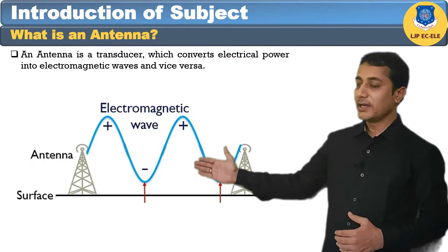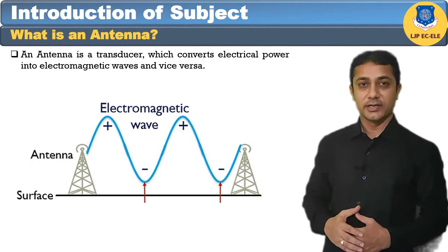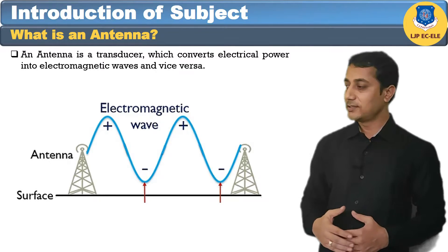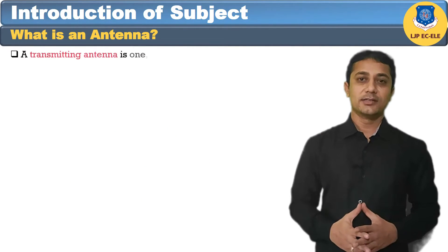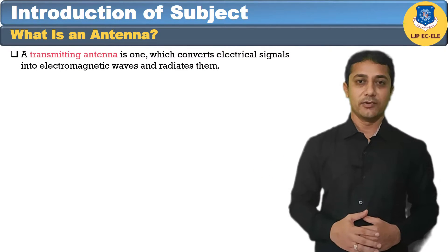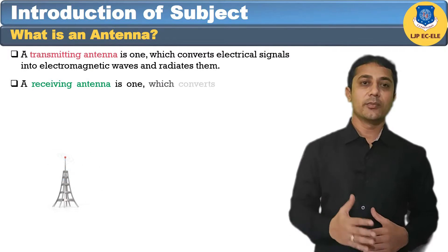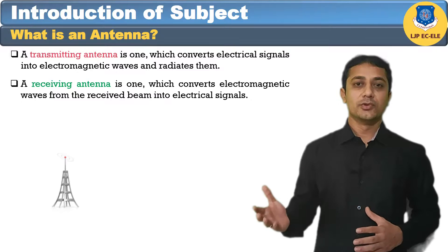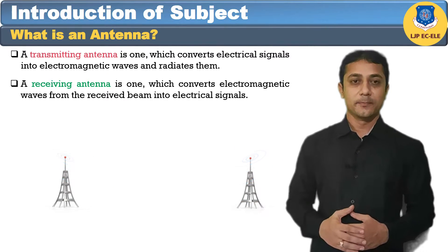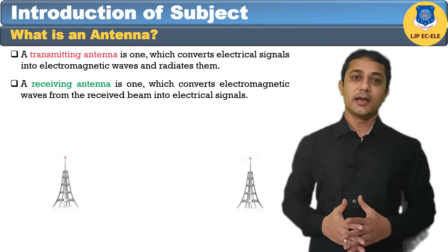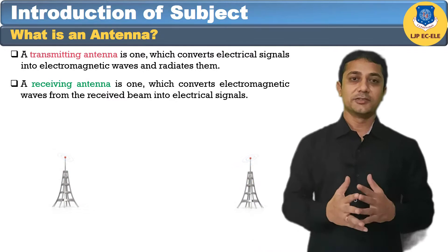Here we can see one antenna transmitting the signal to another antenna — this is the transmitting antenna and this is the receiving antenna. The transmitting antenna is one which converts the electrical signal or electrical power into the electromagnetic wave. A receiving antenna is one which converts the electromagnetic wave back into electrical signals. Both look the same, so we can use the same antenna for transmitting as well as receiving.